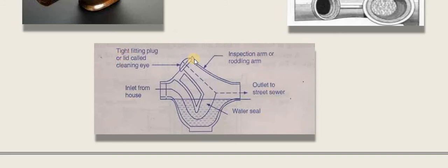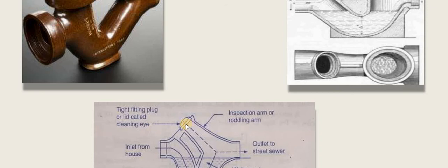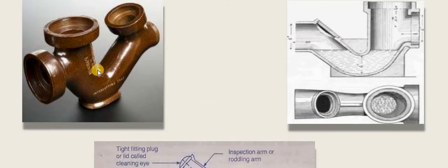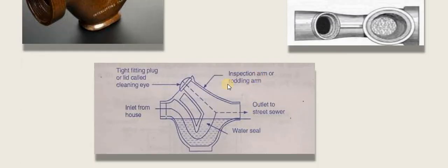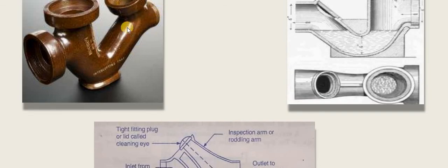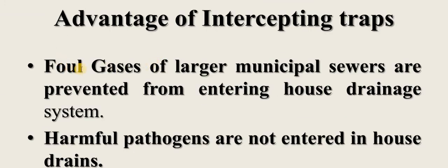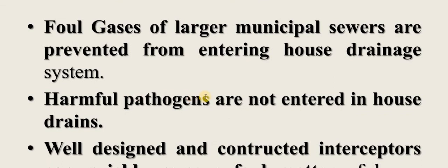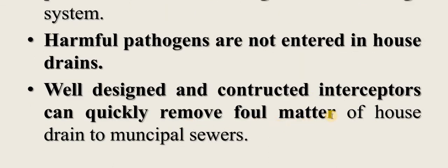The cross-sectional view of an intercepting trap shows a tight-fitting plug, a cleaning eye used for flushing, and an inspection arm. The inlet is from the house and the outlet goes to the street sewer. Advantages of intercepting traps: foul gases from municipal sewers are prevented from entering the house drainage system, harmful pathogens do not enter, and well-designed interceptors can quickly remove foul matter from house drainage to municipal sewers.